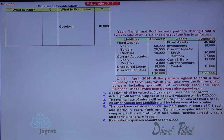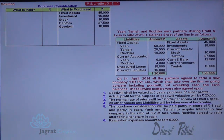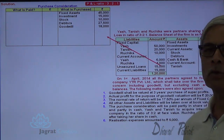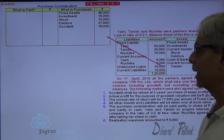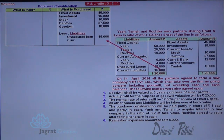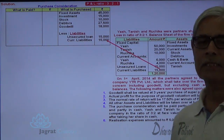All other assets and liabilities are taken at book value, but cash and bank balance is not taken — remember that. Fixed assets are taken at 45,000, investments at 15,000, stock at 10,000, and debtors at 27,500. Cash and bank balance is not included. The current account of Tanish will be debited to the Tanish capital account. Fixed capital accounts will be credited to the capital accounts of partners, and current accounts will also be credited to the capital accounts.